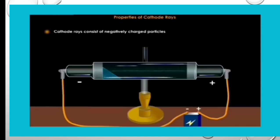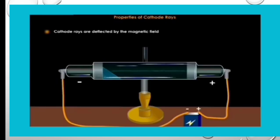The next is cathode rays consist of negatively charged particles. The rays deflect towards the positive plate when the tube is exposed to an electric field. This is because the negatively charged particles in the cathode rays gets attracted towards the positive plate. Third point is cathode rays are deflected by the magnetic field. When the tube is exposed to a magnetic field, the cathode rays follow a curved path showing that they are deflected by the magnetic field.